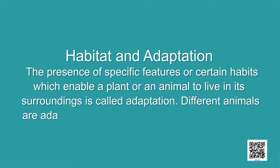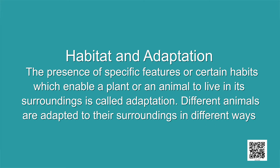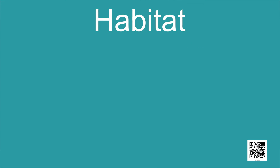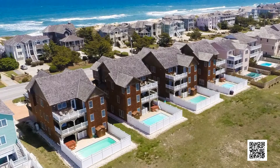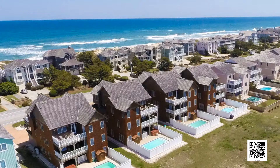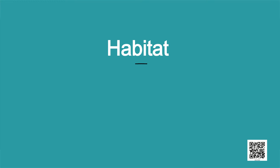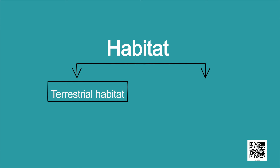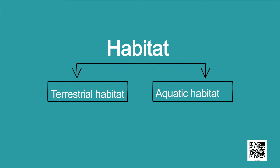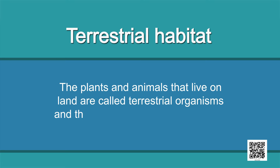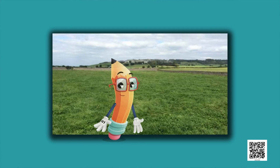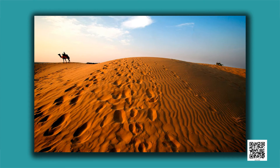Now let us know about habitat. The surroundings where organisms live is called its habitat. The organism depends for their food, water, air, shelter and other needs on their habitat. Habitats are mainly of two types: first is terrestrial habitat and second is aquatic habitat. The plants and the animals that live on land are called terrestrial organisms and their habitats are called terrestrial habitats. Some examples of terrestrial habitats are forests, grasslands, deserts, coastal and mountain regions.